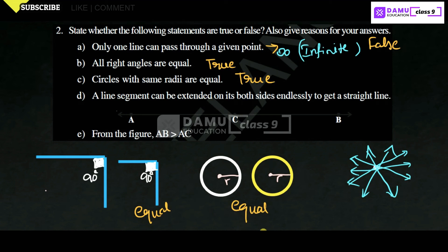Next: a line segment can be extended on both sides to get a straight line. Let's take a line segment — we can extend it in both directions, and it will form a straight line. This statement is true.